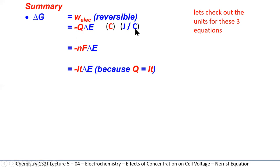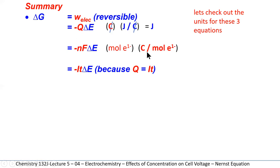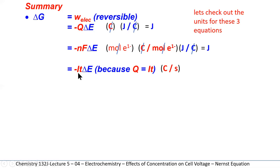The units for Q charge are coulombs, and voltage delta E is joules per coulomb. When we multiply a coulomb by joules per coulomb, the coulombs cancel and we end up with joules. For the second equation, N is moles of electrons, F is coulombs per mole of electrons, and delta E is joules per coulomb. The moles of electrons cancel and the coulombs cancel, so again the result is in joules.